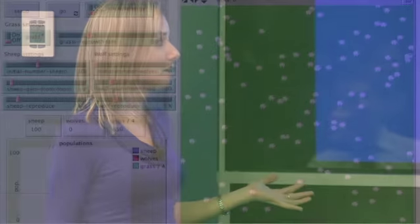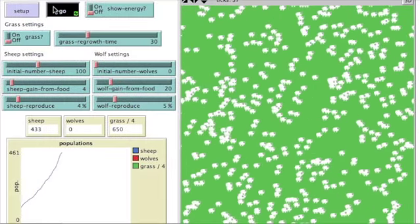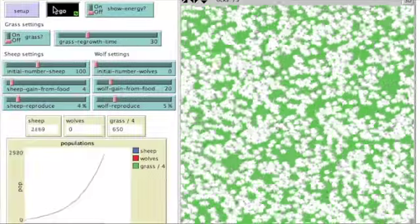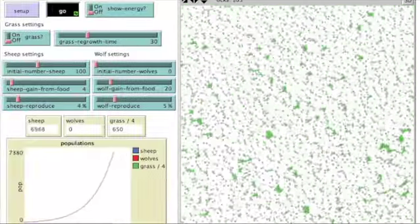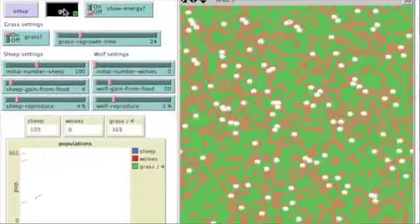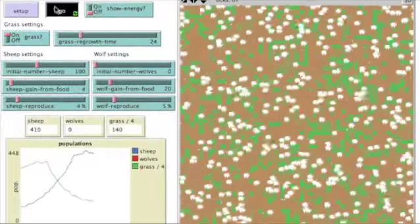So for example, we can set up our initial population of sheep to be 100, give them ample amounts of grass, and watch as the population grows exponentially. Or we can place environmental restrictions, limit the amount of grass available, and watch logistic growth develop.